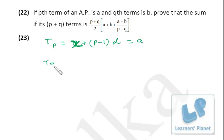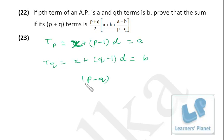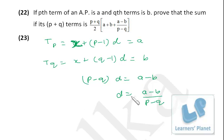So x + (p−1)d = a, and the qth term t_q = x + (q−1)d = b. Now we have to find the sum of (p+q) terms. Before doing that, we subtract the second equation from the first to get (p−q)d = a−b.